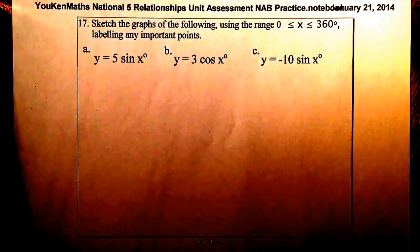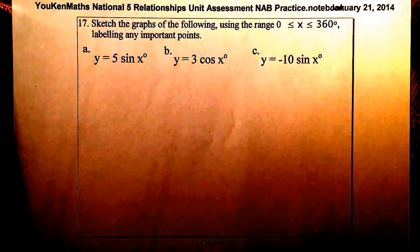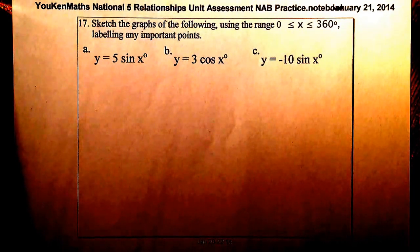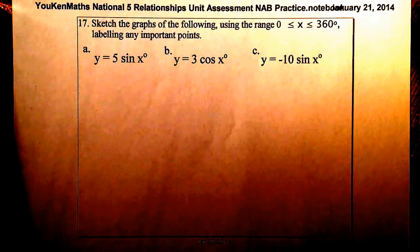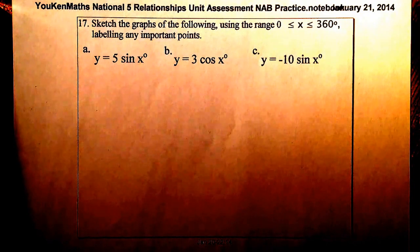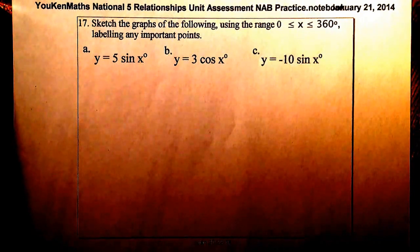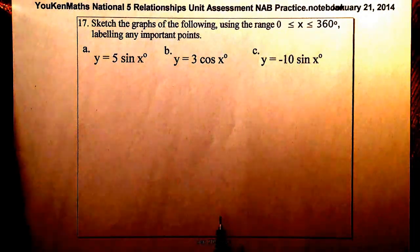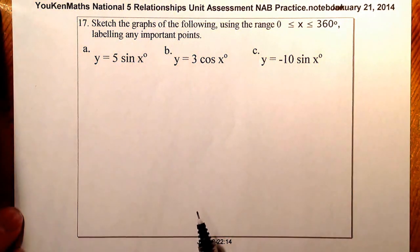This is National 5 Relationships Unit Assessment Practice. We're looking at the Trigonometry section. The section covers three questions: questions 17, 18, and 19, and they meet the standard of 1.5, the assessment standard. The questions are going to be out of six marks in total, and you're required to pass three to be successful in this unit. Let's go ahead and start with question 17.